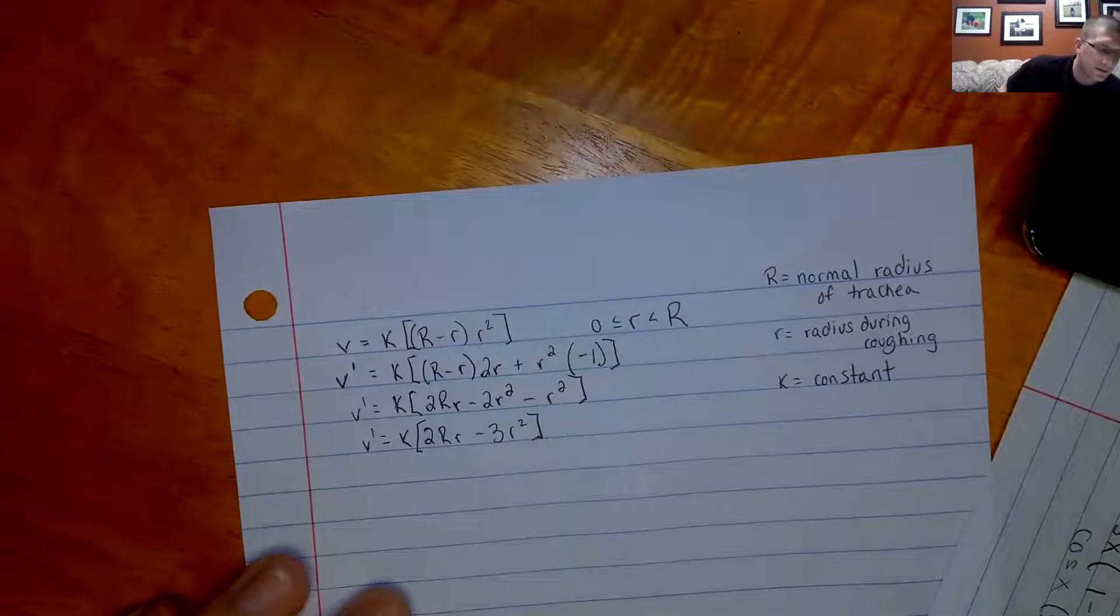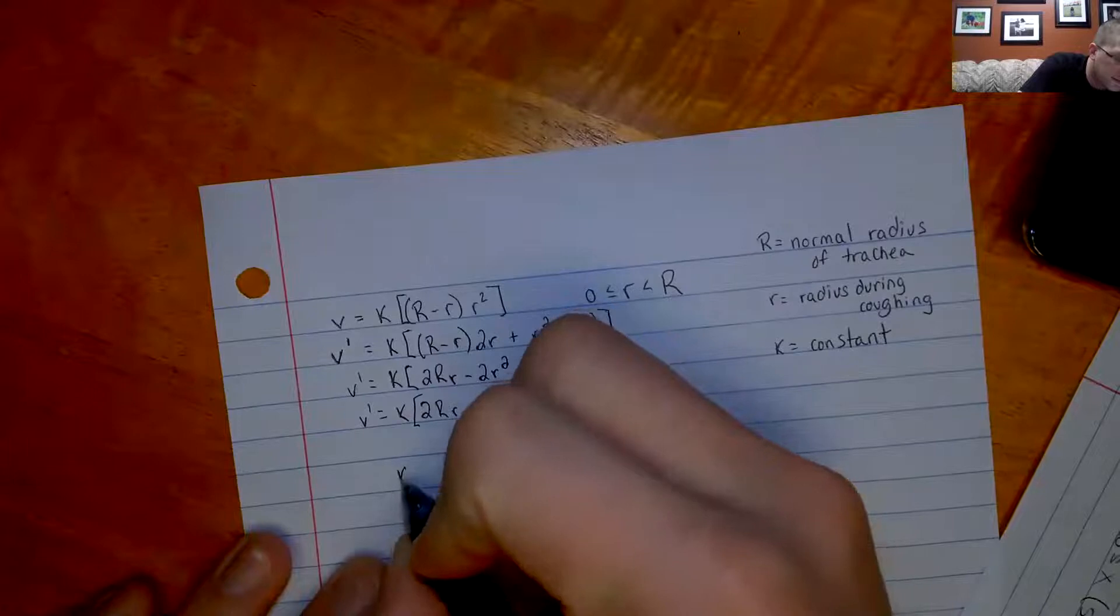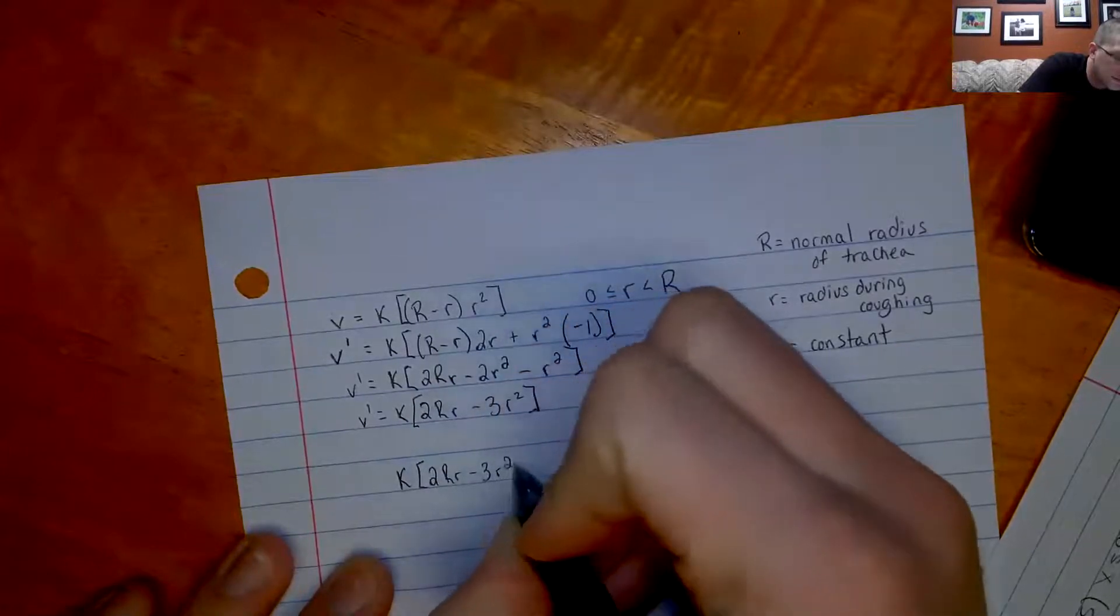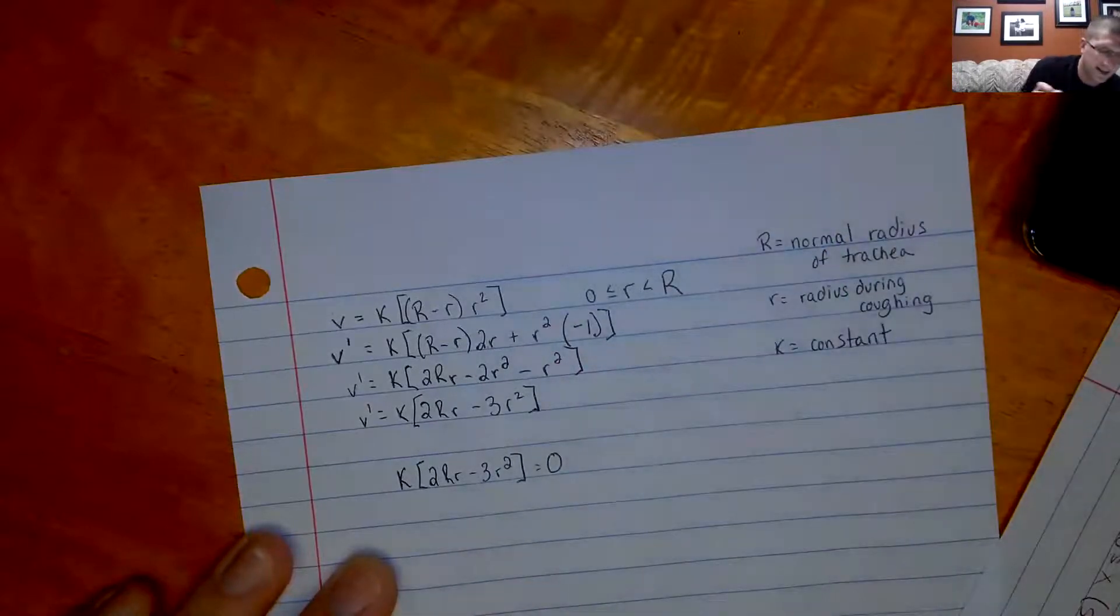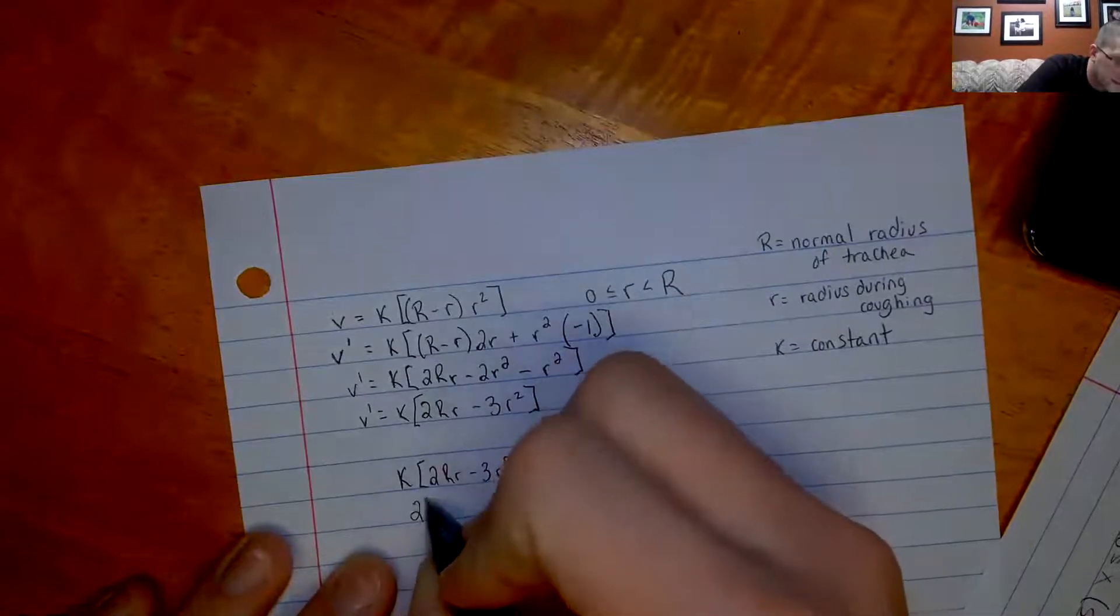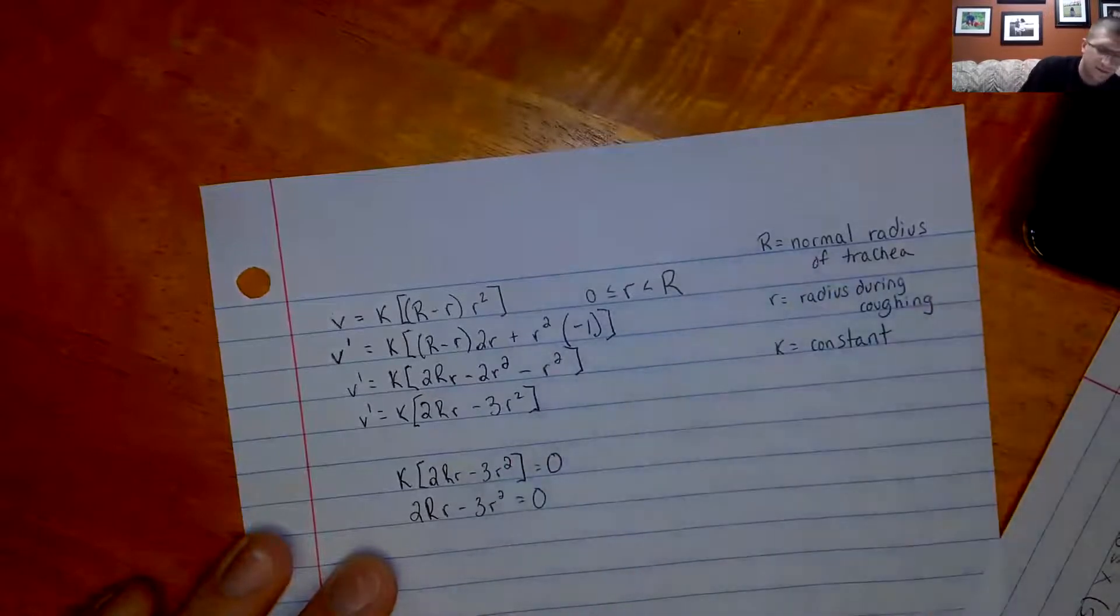So now, I want to take my derivative, set it equal to 0. So I'm going to go ahead and take this derivative, set it equal to 0. The k is just a constant. I can divide that over, so we'll get rid of that. So all I'm left with is this.